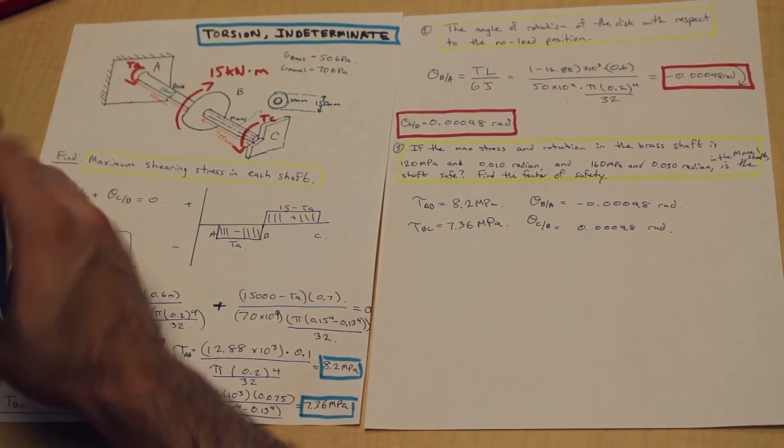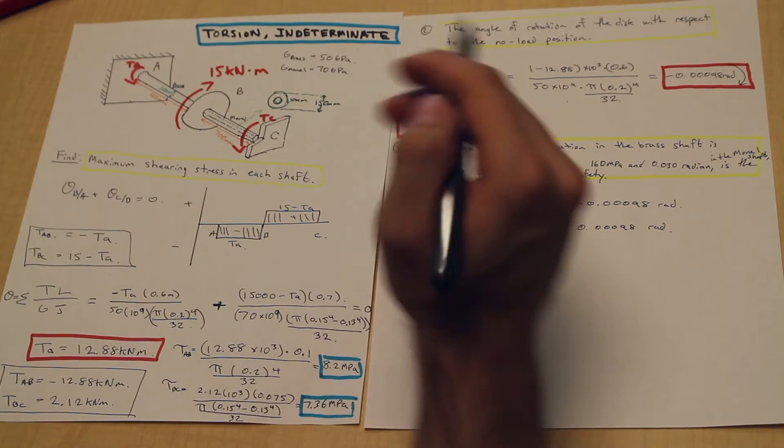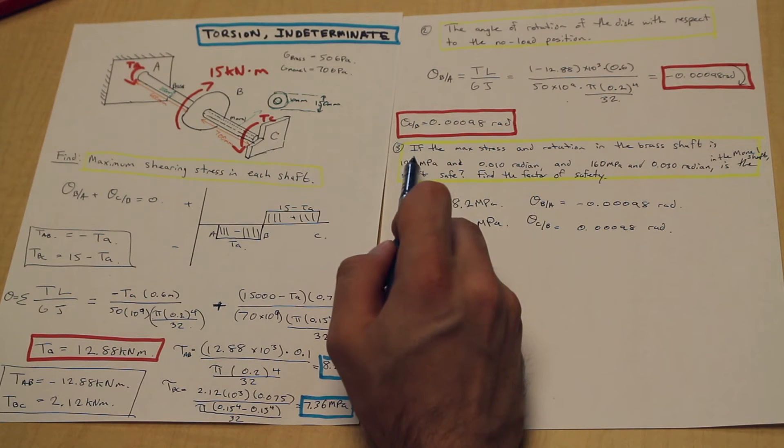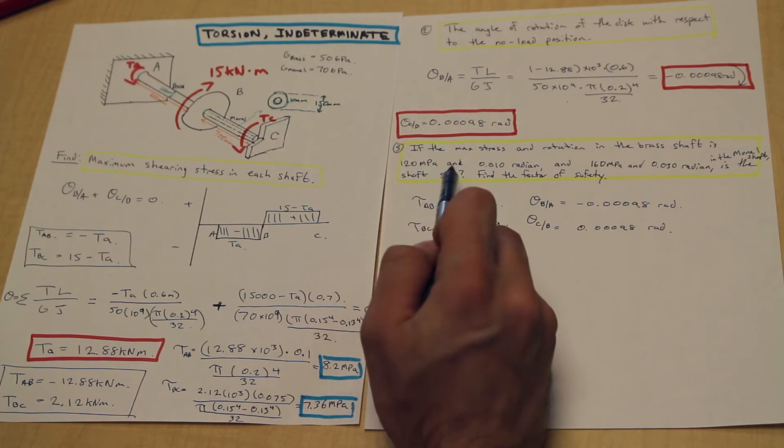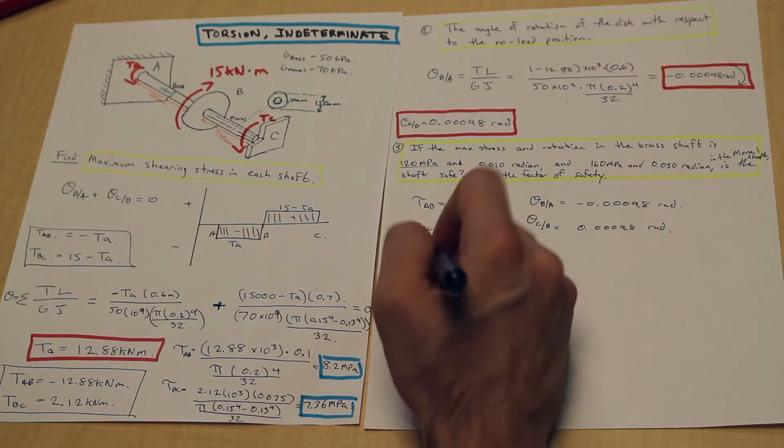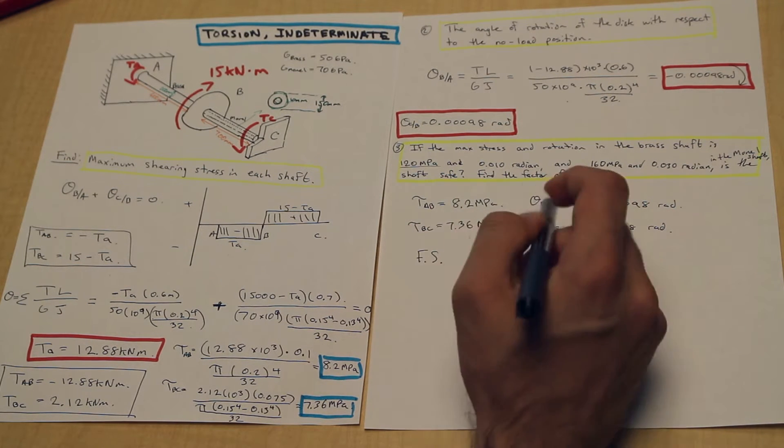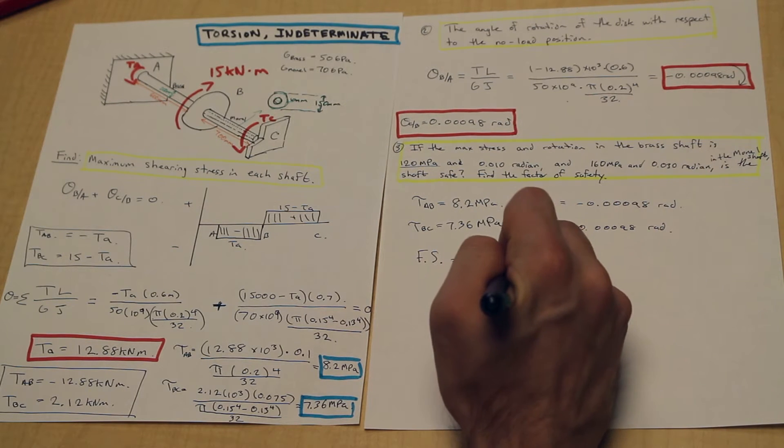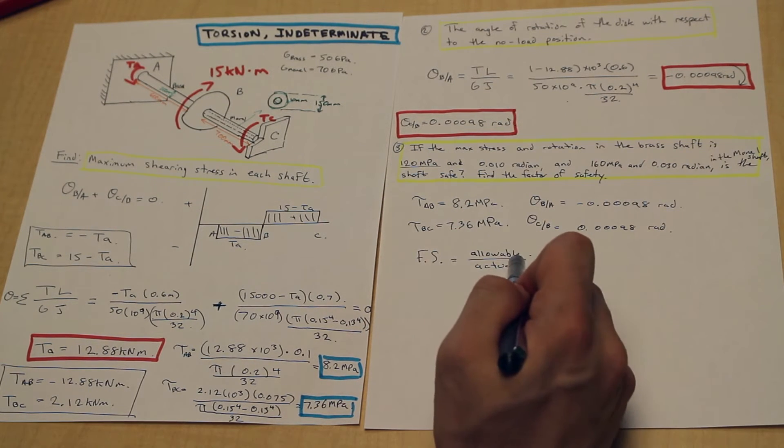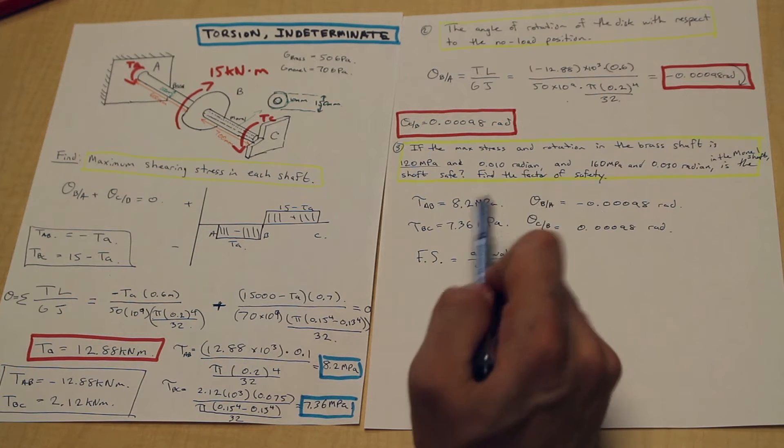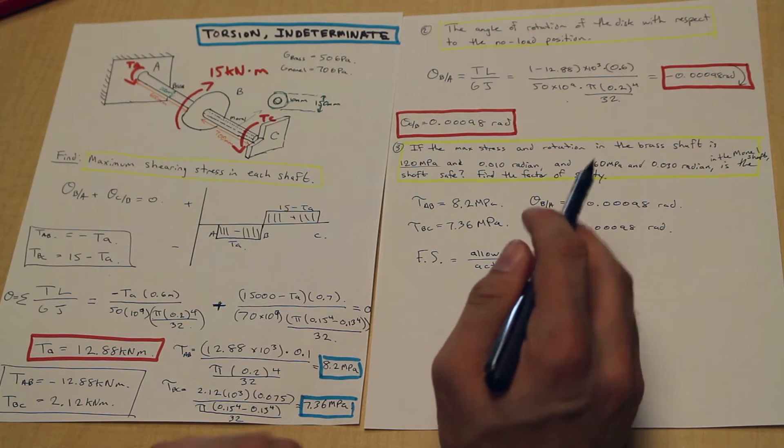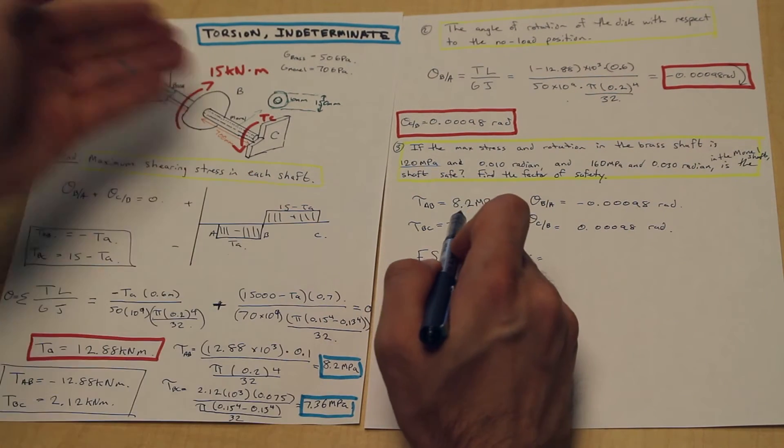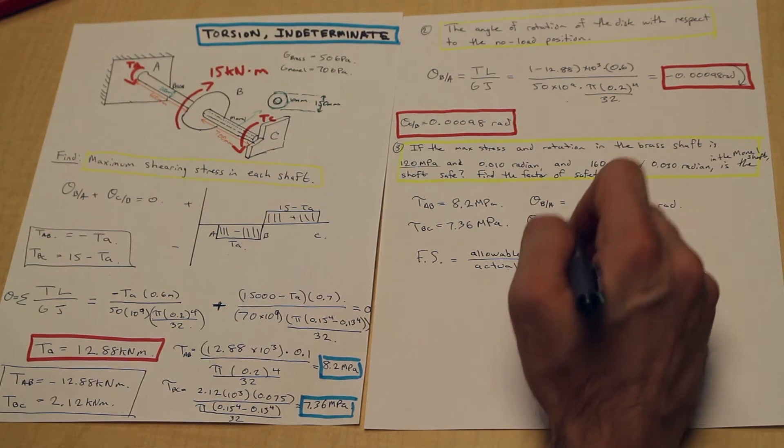How do we determine whether the shaft's safe? We can determine that directly from finding the factor of safety for each section in both shear and in twist. Let's start with shear, section AB. What is the maximum stress the brass shaft can take? It's 120 MPa as given in the question. The factor of safety of anything you're doing is equal to the allowable over the actual. That means it's the stress that the shaft can take and the actual is the stress the shaft is experiencing. In this case, the shaft is experiencing a shear stress of 8.2 megapascals, and that's our actual.